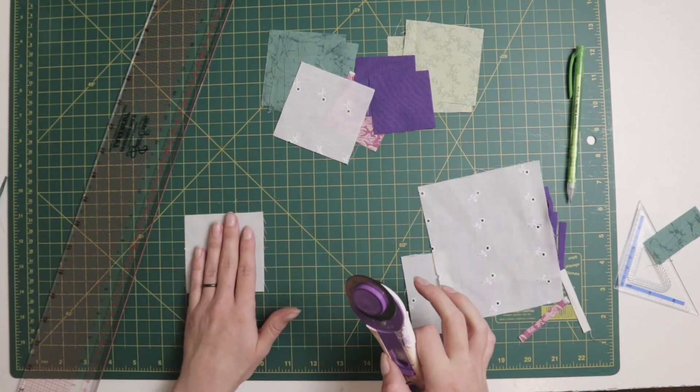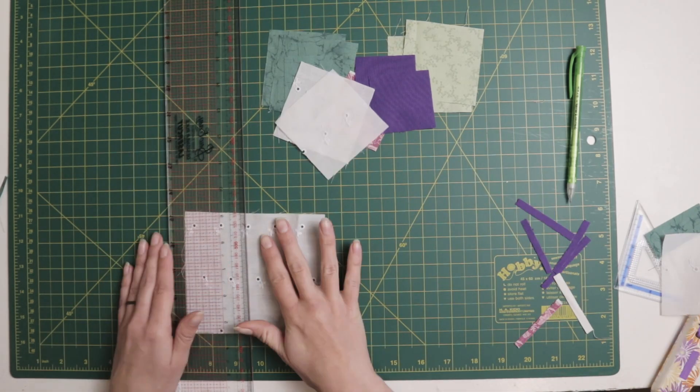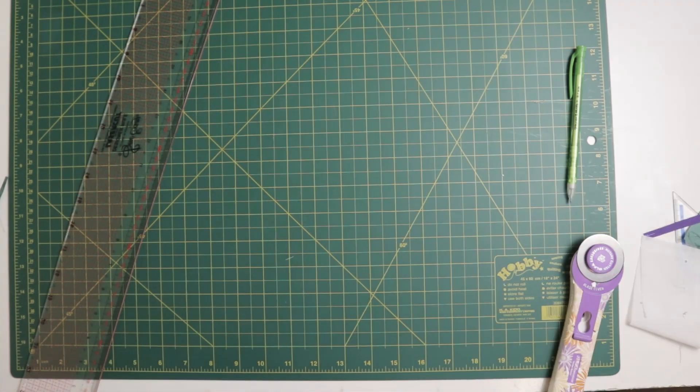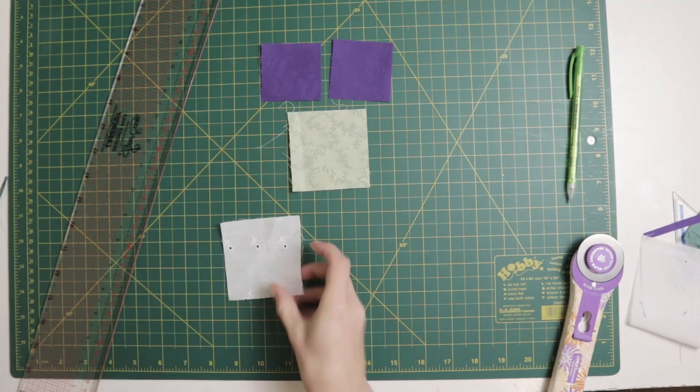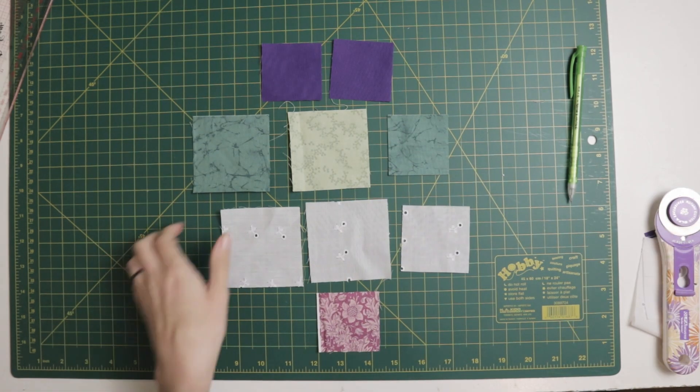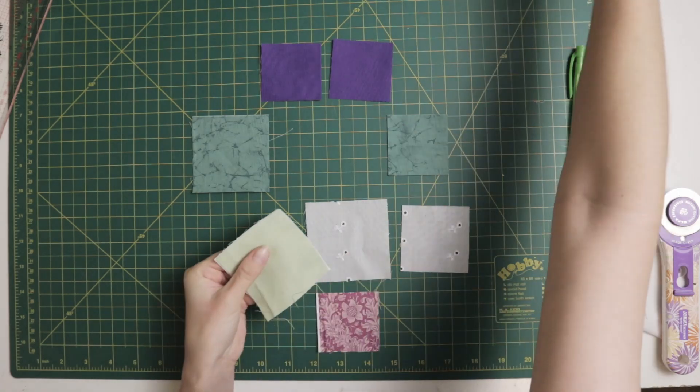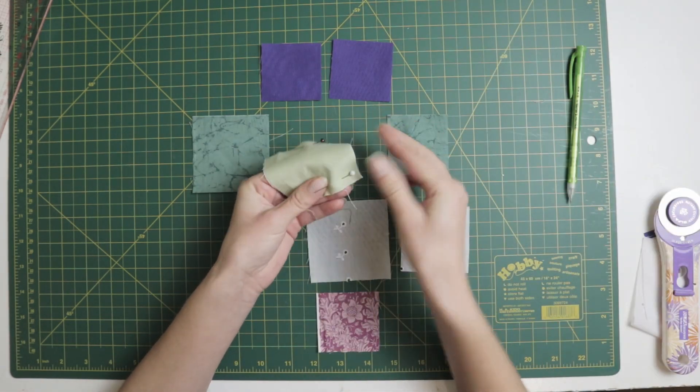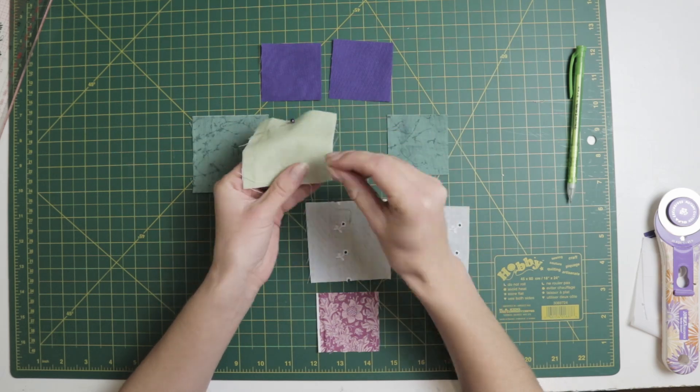For each cornered flower, I cut out a three inch square of the light green, a three inch square and a two and a quarter inch square of the darker green, a two and a quarter inch square of the light purple, two two and a quarter inch squares of the darker purple, and two three inch squares and one two and a quarter inch square of the white.